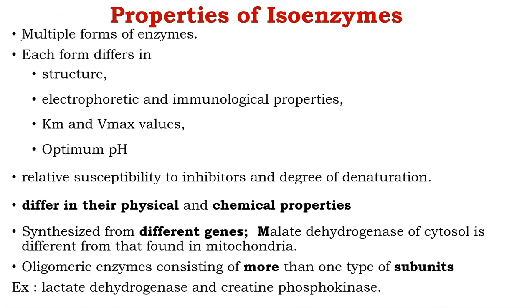Isoenzymes are called multiple forms of the enzyme — there may be two, three, four, or five enzymes, all catalyzing the same reaction. They differ in structure, electrophoretic mobility, immunological properties, Km values, Vmax values, optimum pH, and their relative sensitivity to inhibitors and degree of denaturation. Overall, they differ in many physical and chemical properties even though they catalyze the same reaction.